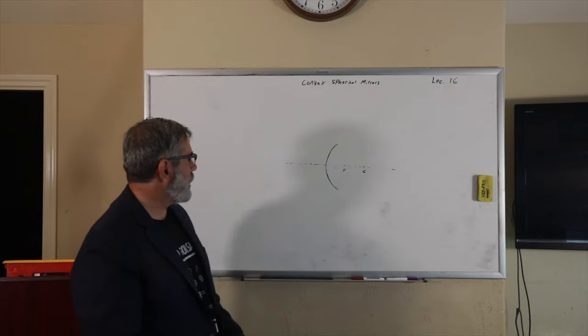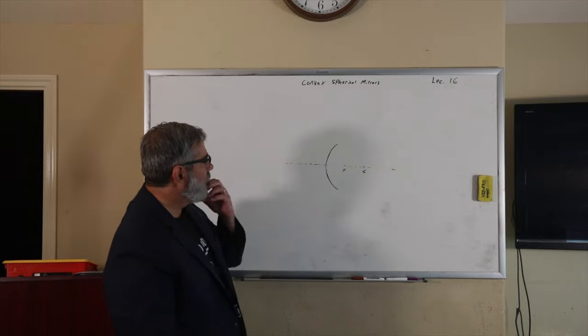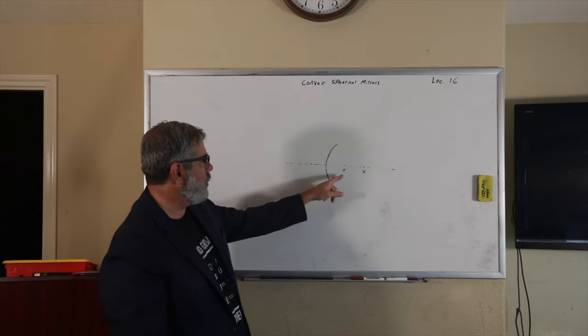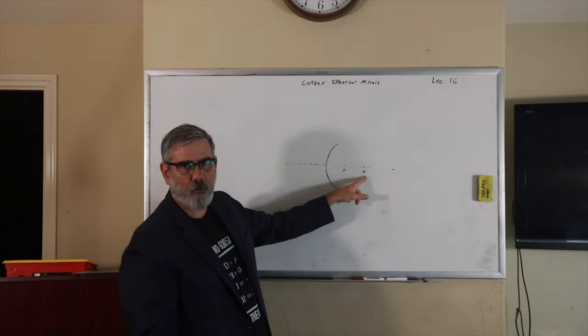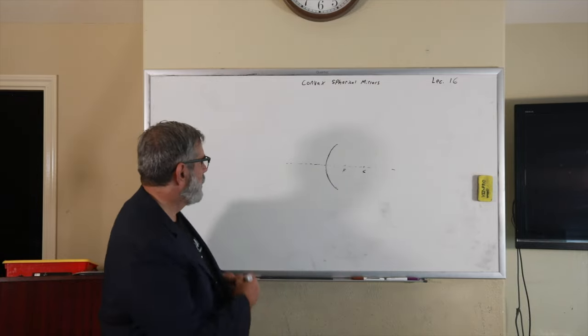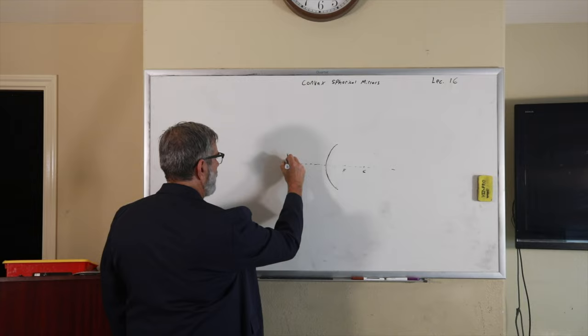Okay, so we're going to consider convex spherical mirrors. I can use the same mirror that I had before, but this time I'm going to come from this side. The focus and the center of curvature, the radius of curvature, will still be on the concave side. But I'm going to put my object over here, like so.